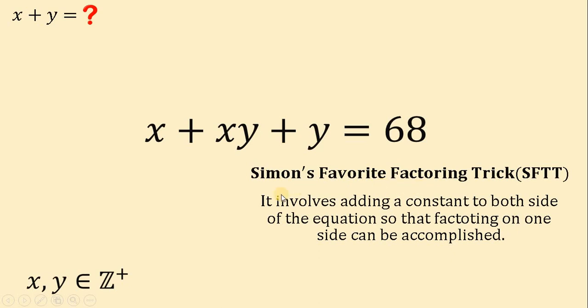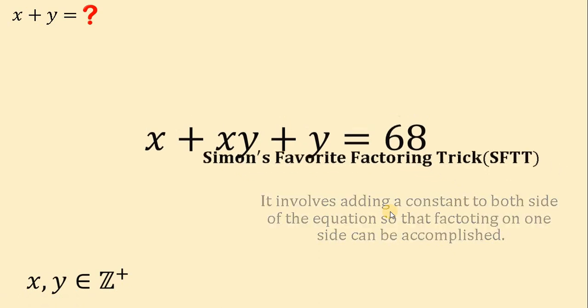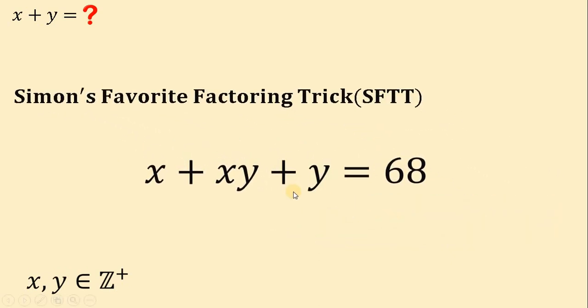Simon's Favorite Factoring Trick involves adding a constant term to both sides of the equation so that the factoring on one side can be accomplished. We will use this method to answer this question. Now, the question is, what constant do we need to add so that one side of the equation is factorable?